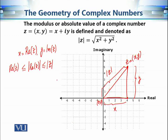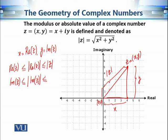Similarly, we can say the same about y. Since y is the imaginary part of z, we have Im(z) ≤ |Im(z)|, and since the perpendicular of a triangle is less than or equal to the hypotenuse, we can say that |Im(z)| ≤ |z|.